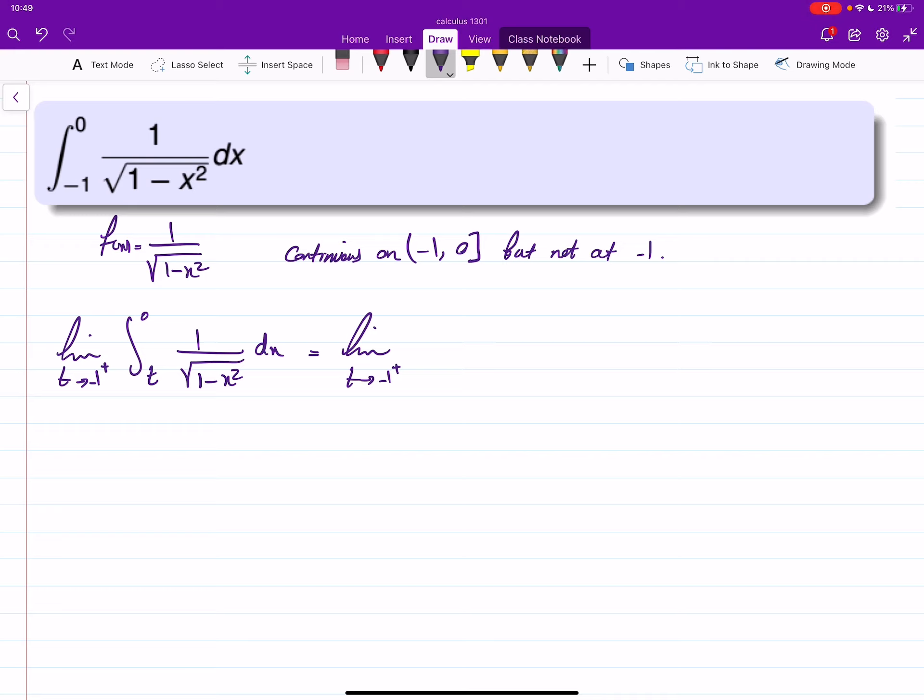Well, what is the antiderivative of 1 over root 1 minus x squared? So here you can use the table or use substitution, but at the end you will get something like sine inverse of x going from t to 0, and sine inverse of 0 is 0.